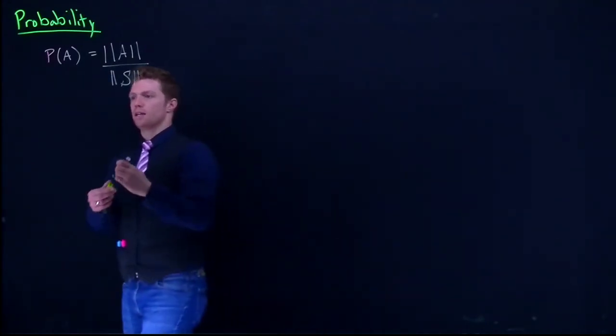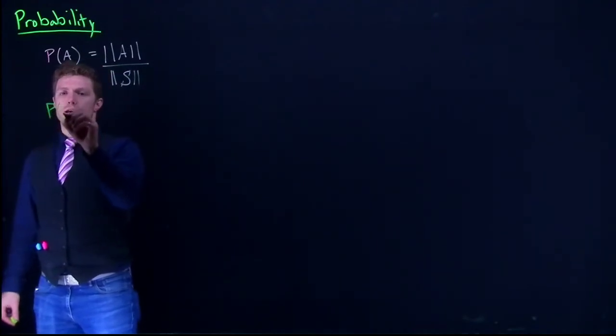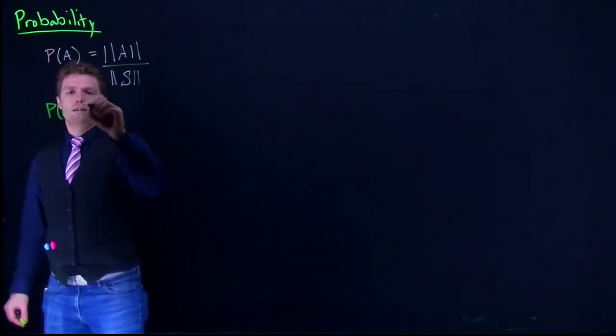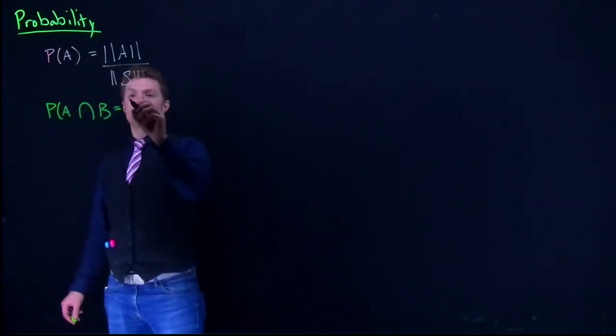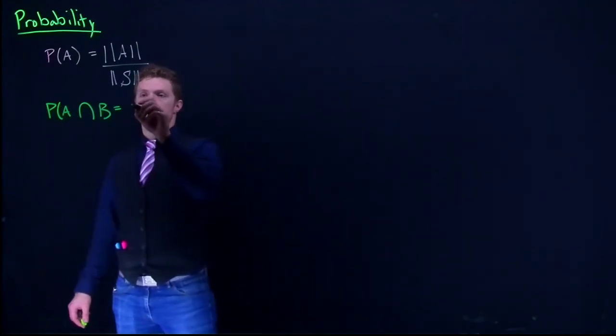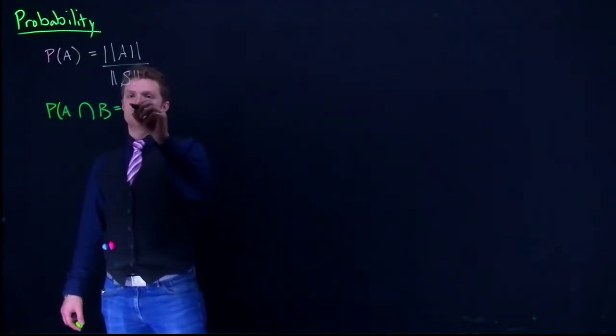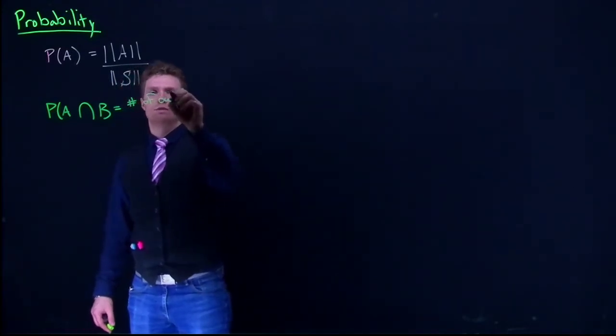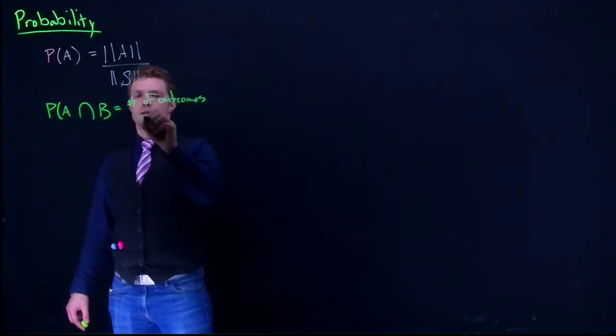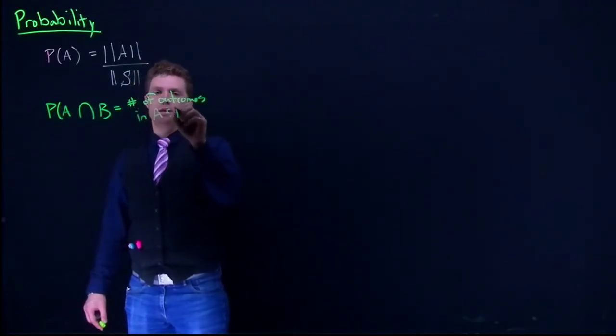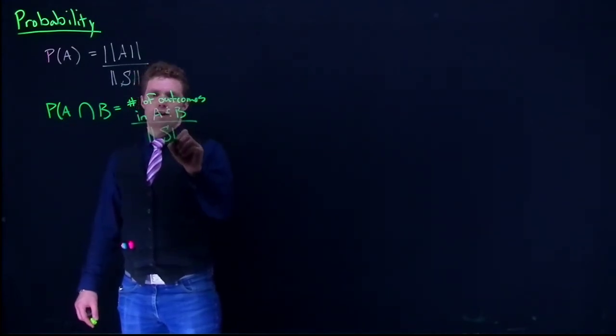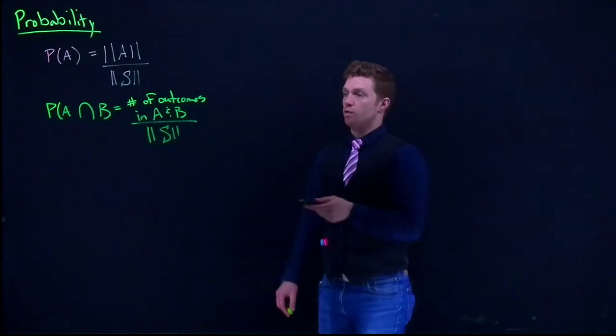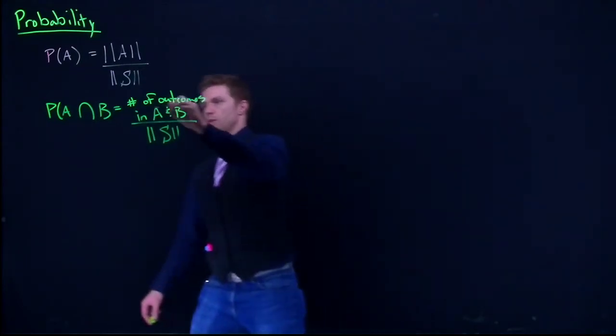So we just have the probability of a basic event, once again, number of events in A divided by number of events in the sample space. Alright, so that's just basic probability. The next one that we had covered was the probability of A intersect B. And that was just the number of events in both A and B.